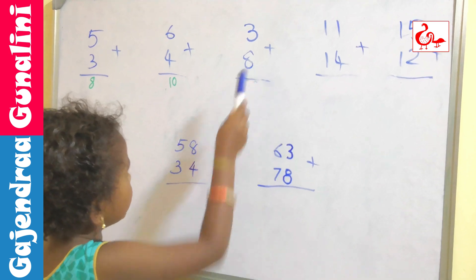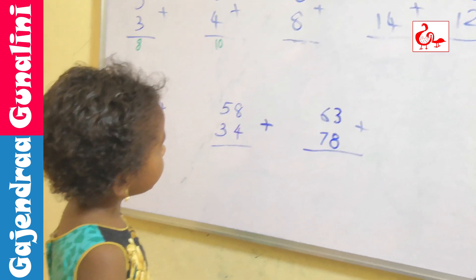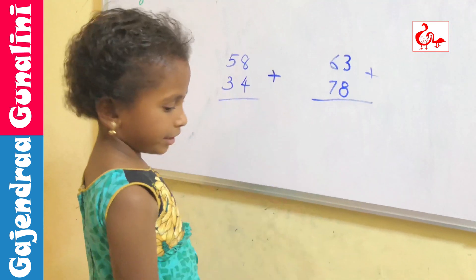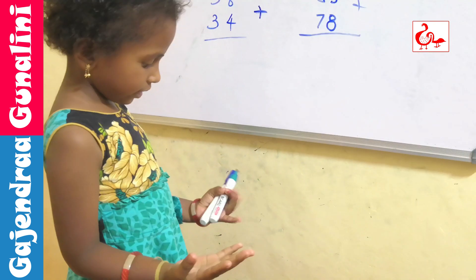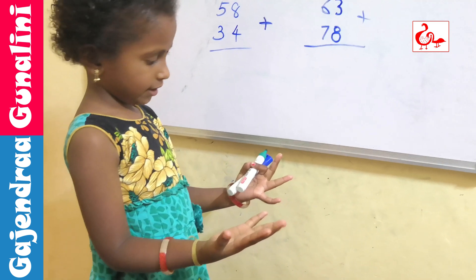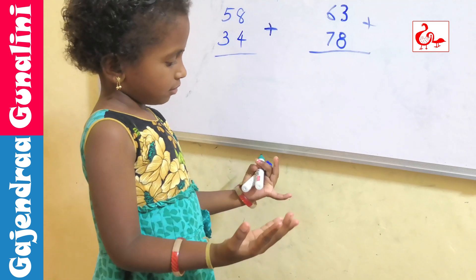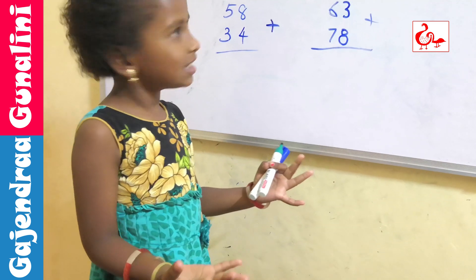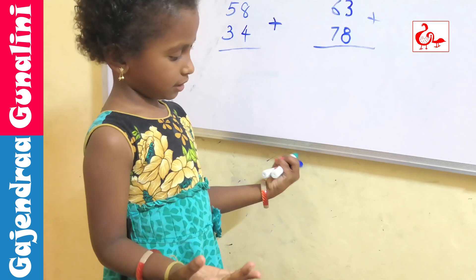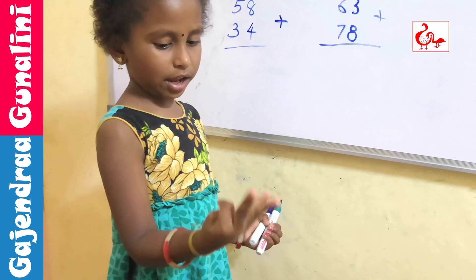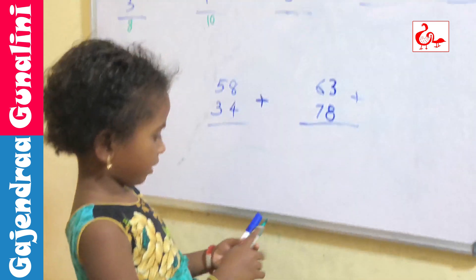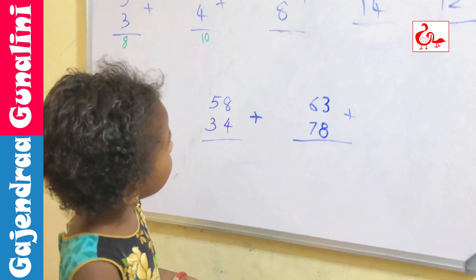3 plus 8. 3 in the mind, 8 in the finger. 3 after: 4, 5, 6, 7, 8, 9, 10, 11. We need to write 11.